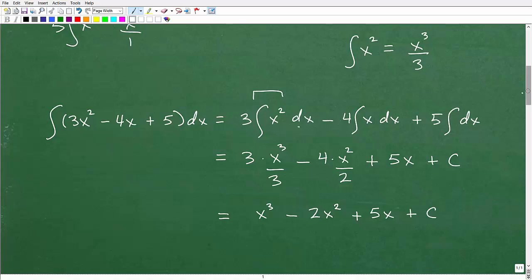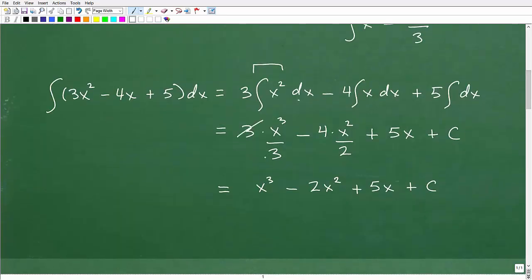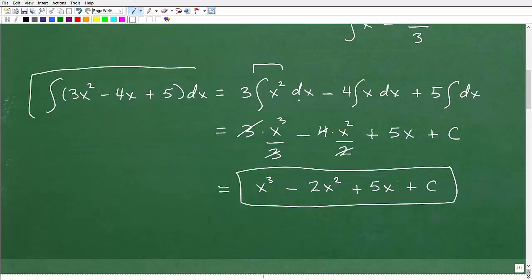So from this point forward, we go ahead and just employ our basic algebra skills. We cross-cancel the threes. 2 goes into this 4, twice. And then we have our 5x plus C. So this would be the integral of this basic integration problem.